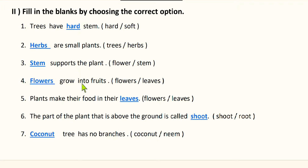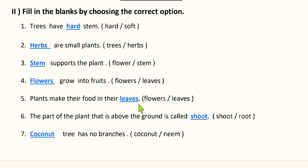Next: blank grow into fruits. What grows into fruits — flowers or leaves? Flowers grow into fruits. Next: plants make their food in their blank. Where do plants make their food — in flowers or in leaves? Generally, plants prepare their food in their leaves. So leaves is the correct option.